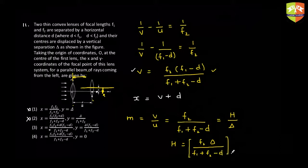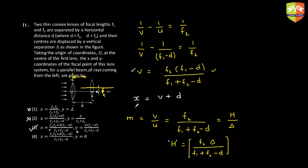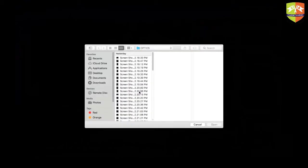The y-coordinate is measured from the first principal axis, so y = image height from second axis − δ = f2·δ/(f1 + f2 − d) − δ, which gives the expression in option 3. This is the correct answer. This is a difficult question; if something like this appears in JEE Mains, leave it — it will eat your time. This type is more suited to JEE Advanced.